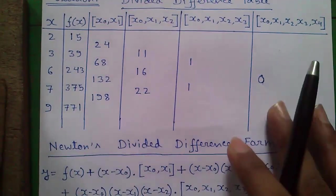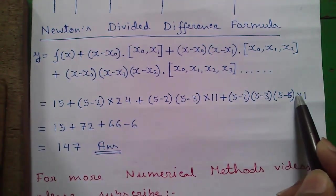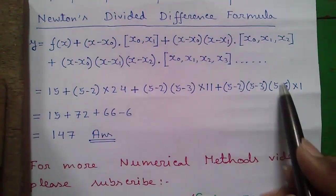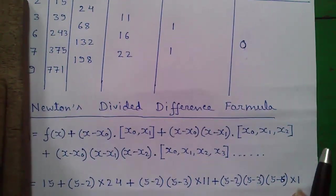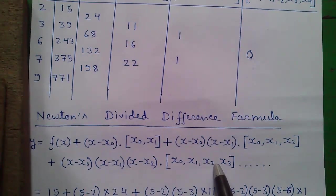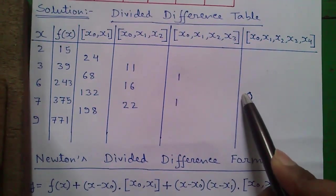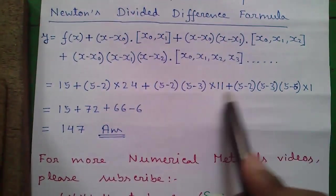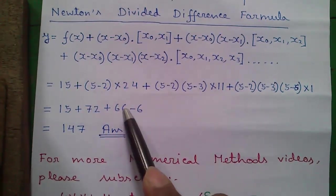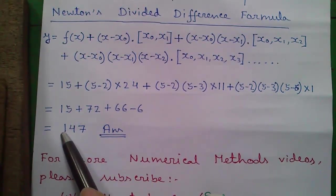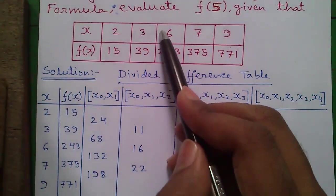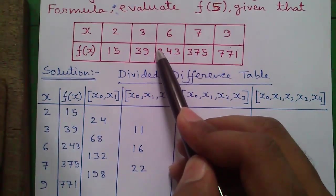Then x2 is the third number, that is 6 — so 5 minus 6 — into the first number in the x0, x1, x2, x3 column, which is 1. We are not considering the next term because it multiplies into 0, and 0 into anything is 0 — so we stop the calculation here. Simplifying: 15 plus 72 plus 66 minus 6 equals 147, which is our required answer. So for x equals 5, our f of x value or y value will be 147.